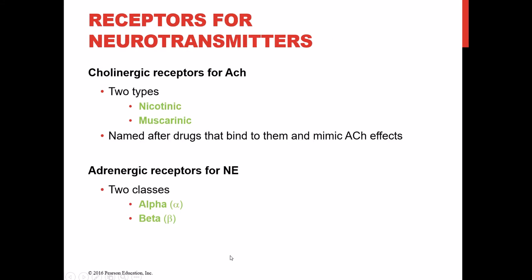There are two types of receptors for acetylcholine: nicotinic and muscarinic. They are named after drugs that bind to them — nicotine acts like acetylcholine when binding to nicotinic receptors, and muscarine is a substance that similarly mimics acetylcholine. For norepinephrine, there are two classes of receptors collectively known as alpha receptors and beta receptors.